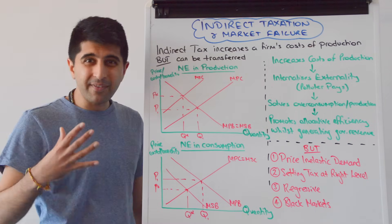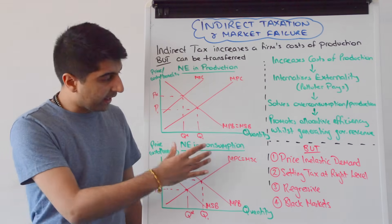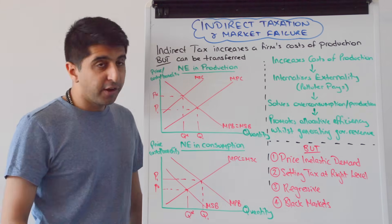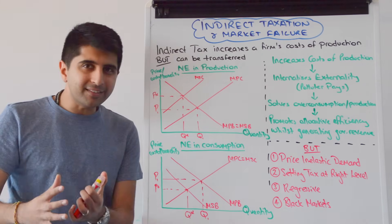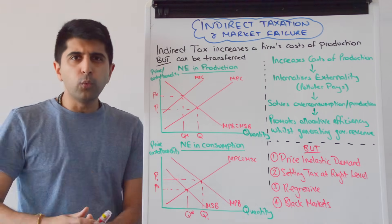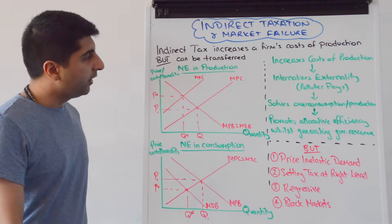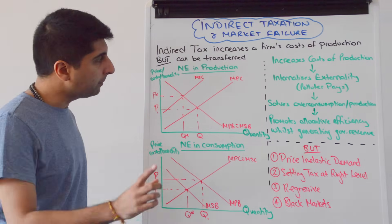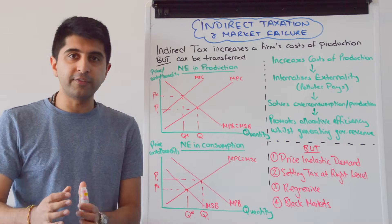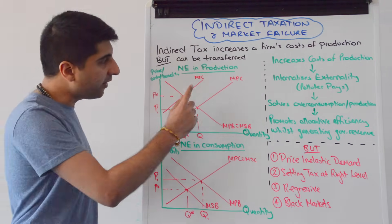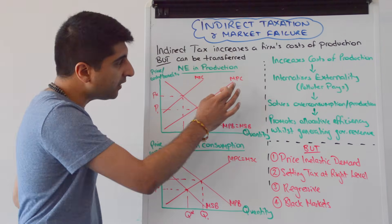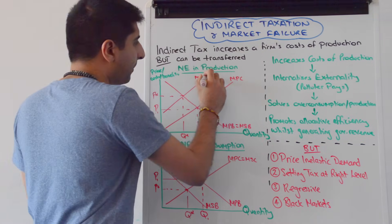So we're looking at negative externalities in production and in consumption — that is also a demerit good. If we take negative externalities in production first, I've drawn the base diagram. This diagram shows the negative externalities in production as we know. What would an indirect tax like a carbon tax do on this diagram? Well, it increases a firm's cost of production, so the marginal private cost curve is going to shift to the left. We'll assume the tax is perfect, so we're going to shift the MPC curve perfectly towards MSC.